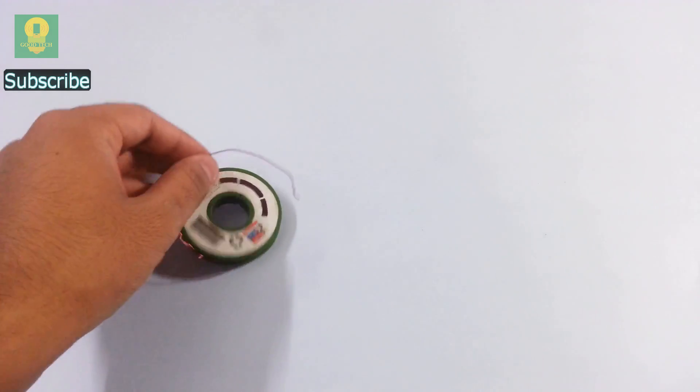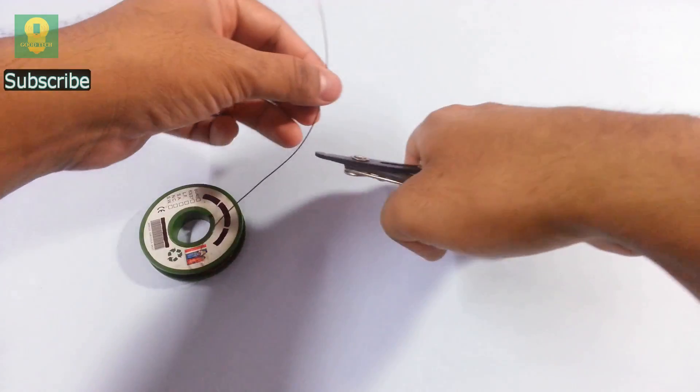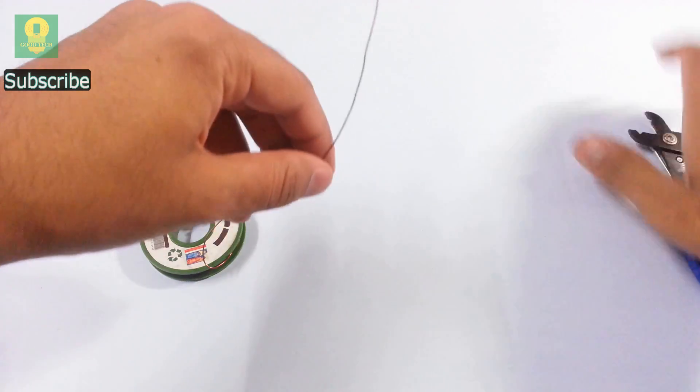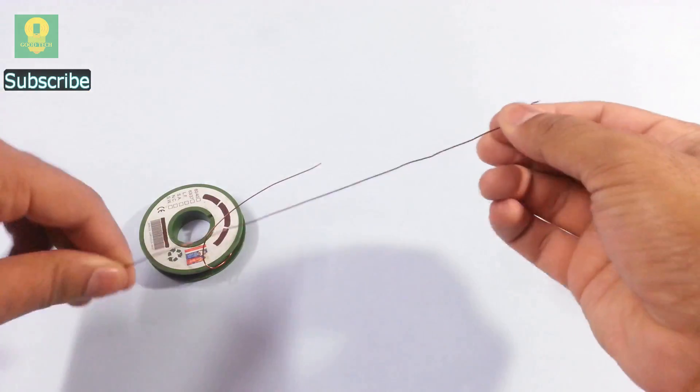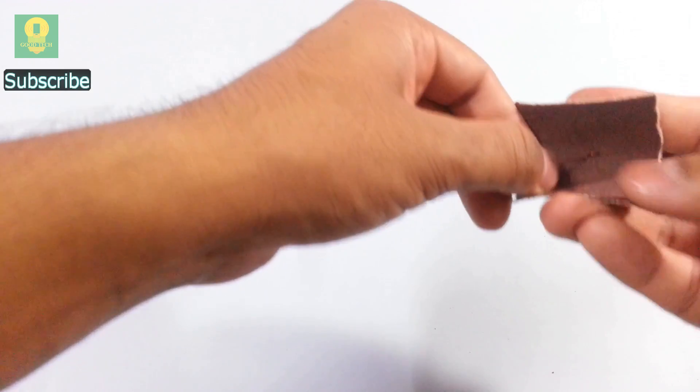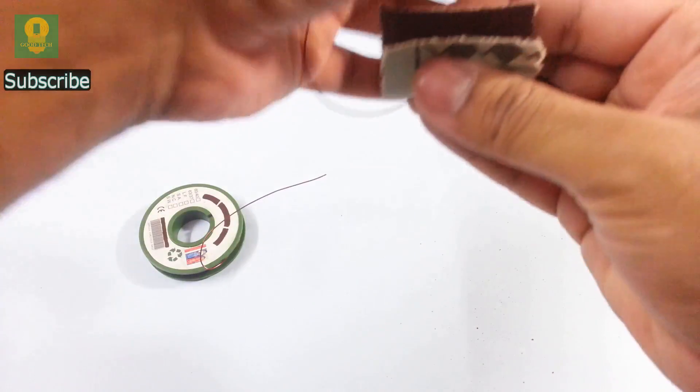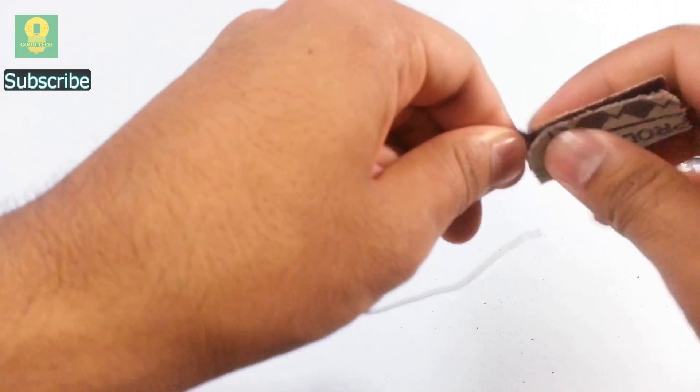We will first start by making the rotating coil for the motor. Take a piece of copper wire. Using sandpaper, remove the insulation from both the sides as well as from the middle.